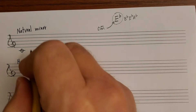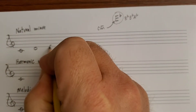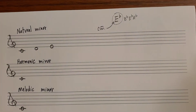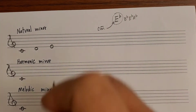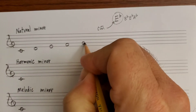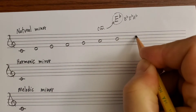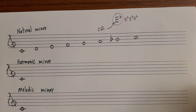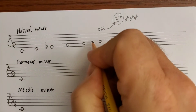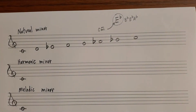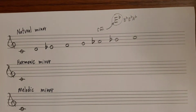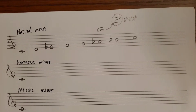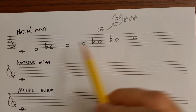To write C natural minor, all you have to do is plug in the B flat, E flat, and A flat. So here's C to C in one octave with B flat, E flat, and A flat. The natural minor scale has the same accidentals as the relative major — in this case E flat major — but it just starts on a different pitch. So three flats: B flat, E flat, and A flat.